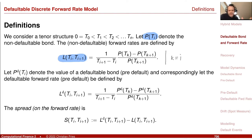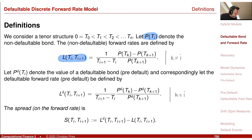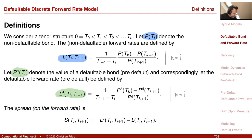Now we can define the same object for the defaultable bond. We have our defaultable bond, P superscript d — same typo, k should equal i. We can observe this on the market and define the same object. Based on these two objects, I define the spread: the credit spread on the forward rate, which is just the difference of the defaultable interest rate and the non-defaultable one.